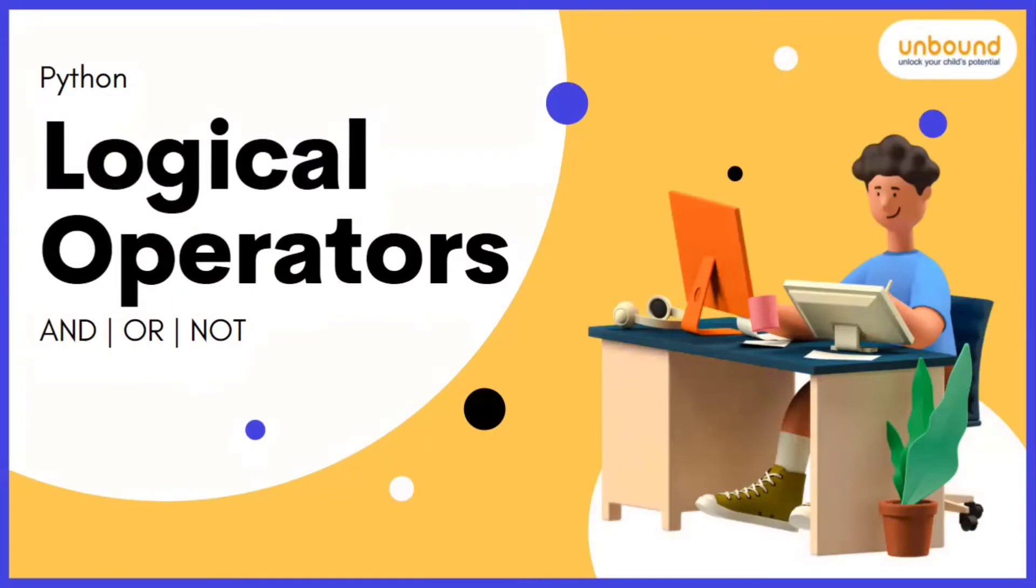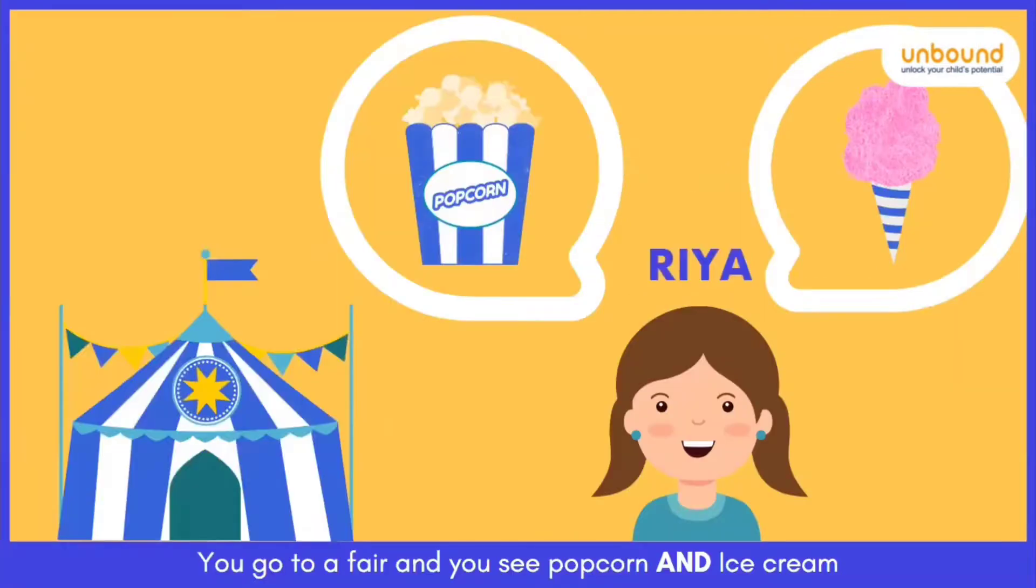Logical operators are basically of three types: and, or, and not. Let's take an example.